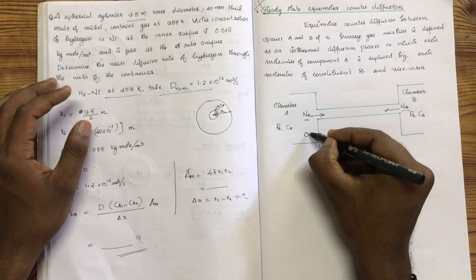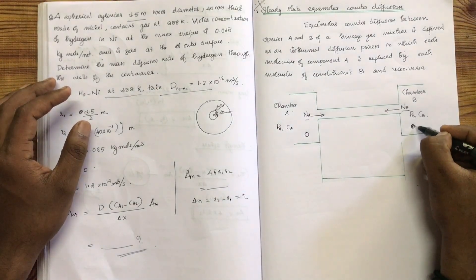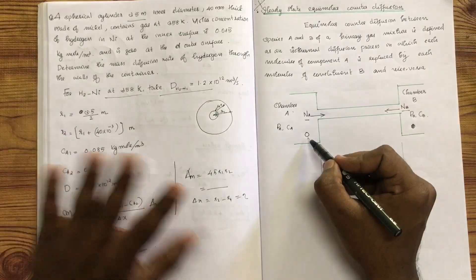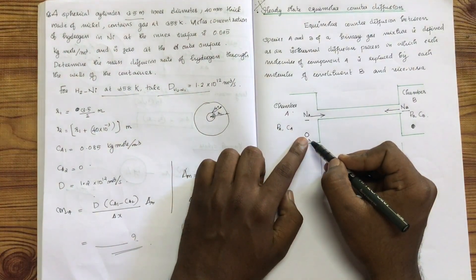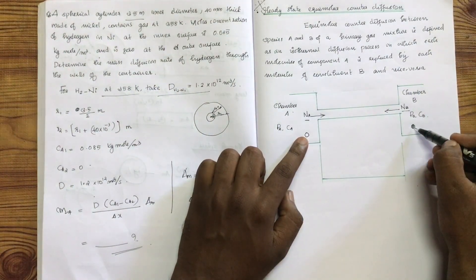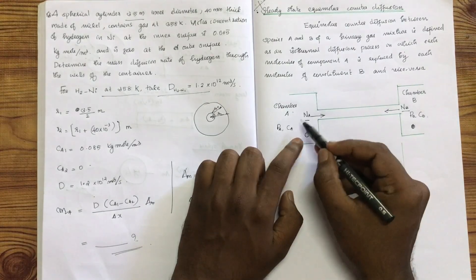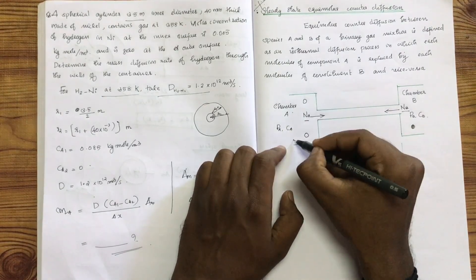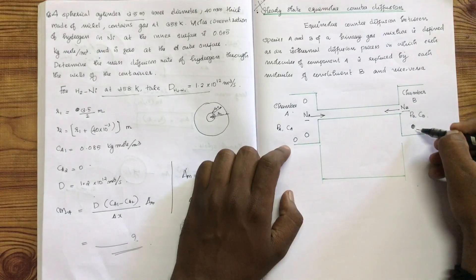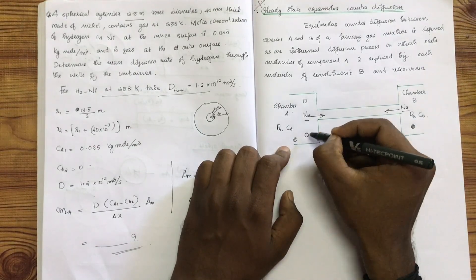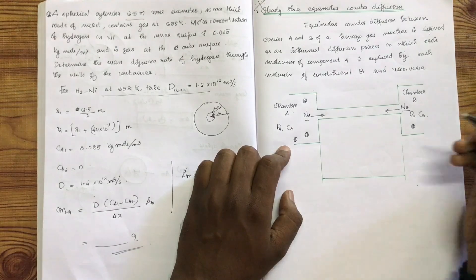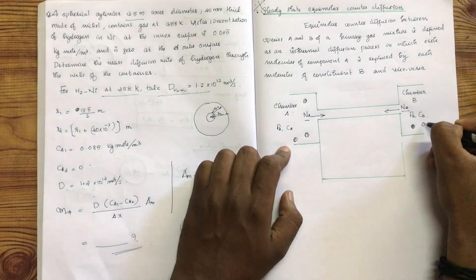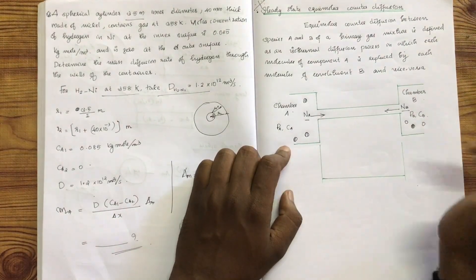Now if there are A-type molecules and B-type molecules, each and every molecule of A shall be replaced by molecule B. If we replace all A molecules, we can replace all B molecules.